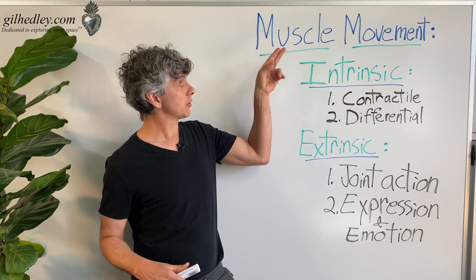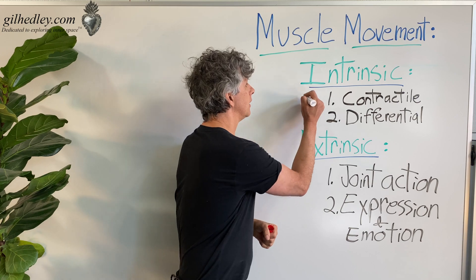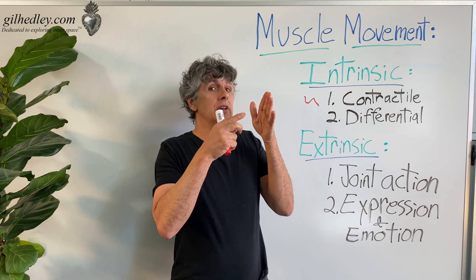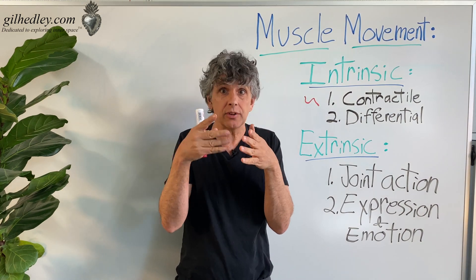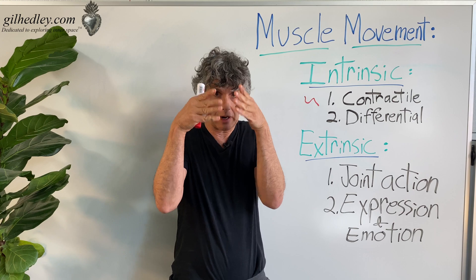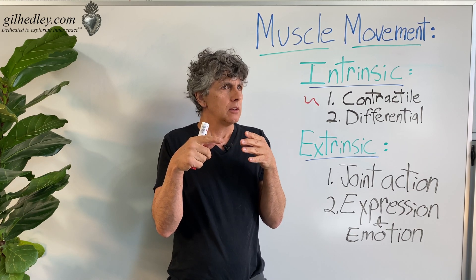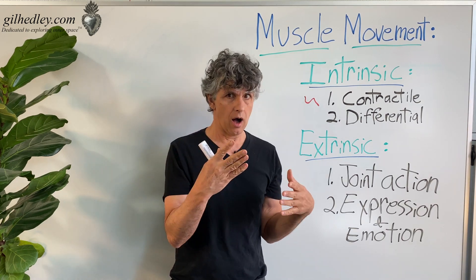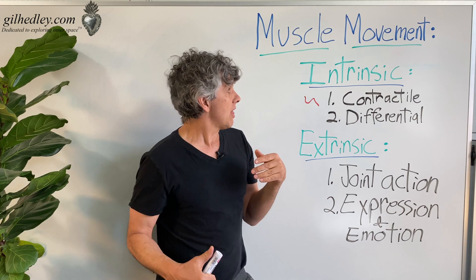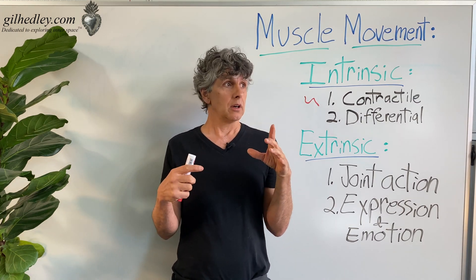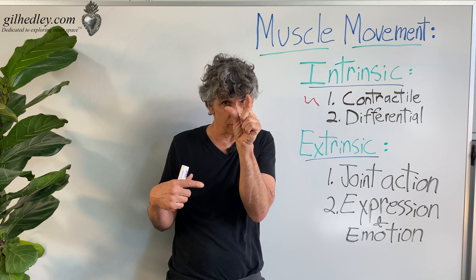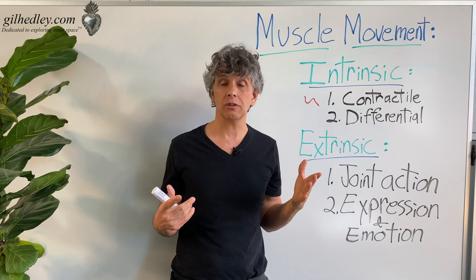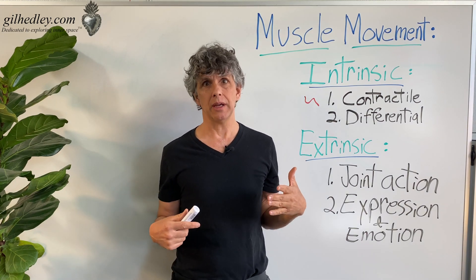Muscle movement properties — intrinsic number one: contractile. Muscles contract. We have all of these proteinaceous fibers organized in little rows, and they are partnered with motor nerves which signal on or off. That on/off property basically results in the muscle fibers getting shorter from end to end — that's what we call contraction.